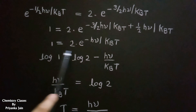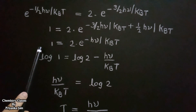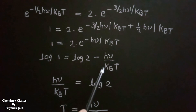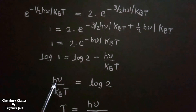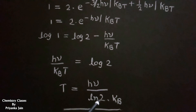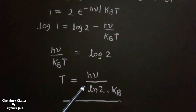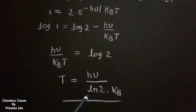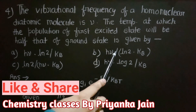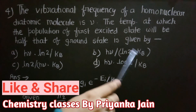Taking the natural logarithm of both sides: ln(1/2) = −hν/kBT, which gives hν/kBT = ln 2. Therefore T = hν / (ln2 · kB). So option B — hν divided by ln2 times kB — is the right answer.